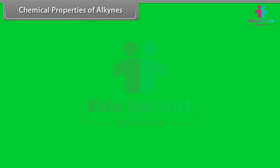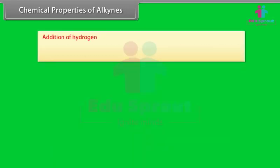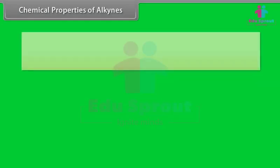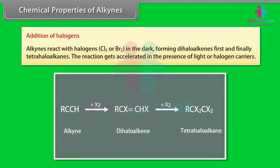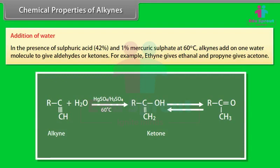Chemical Properties of Alkynes — Combustion: alkynes burn in air or oxygen with a smoky flame. Addition of Hydrogen: an alkyne reacts with hydrogen in the presence of Pt or Ni catalyst at 250°C, first forming alkenes and finally alkanes. Addition of Halogens: alkynes react with halogens (Cl2 or Br2) in the dark, forming dihaloalkenes first and finally tetrahaloalkanes; the reaction is accelerated in the presence of light or halogen carriers. Addition of Water: in the presence of sulfuric acid (42%) and 1% mercuric sulfate at 60°C, alkynes add one water molecule to give aldehydes or ketones. For example, ethyne gives ethanal and propyne gives acetone.